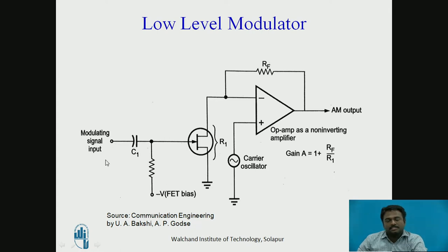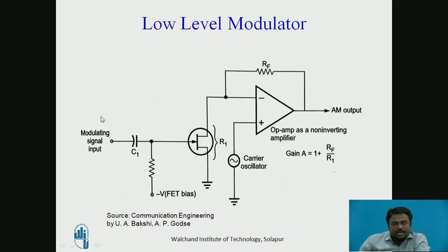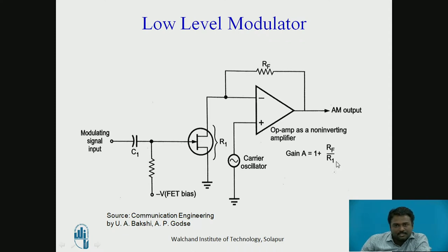In the second scenario, after applying the modulating signal, there are two cycles: positive cycle and negative cycle. When we apply the positive cycle, as the amplitude of the modulating signal increases, the resistance of the FET decreases, which in turn increases the gain of the amplifier, which in turn increases the amplitude of the AM output.